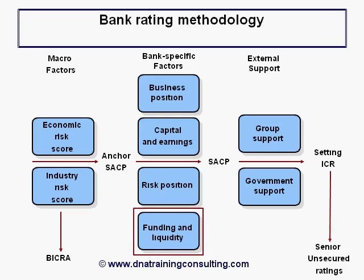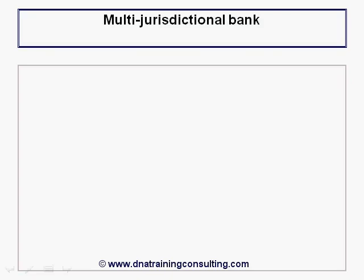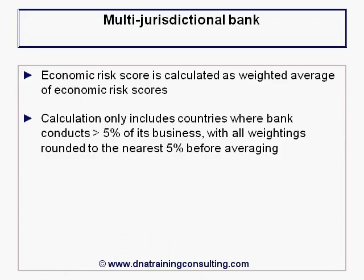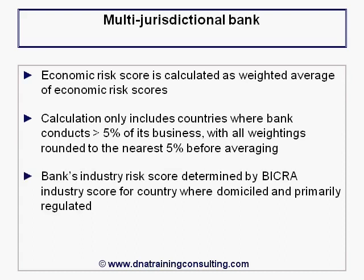Just before we begin our examination of these four bank-specific factors, we must deal with the case of a bank whose business is spread out among a number of jurisdictions. When a bank is active in more than one country, the economic risk score is calculated as a weighted average of the economic risk scores, including only countries where the bank conducts more than 5% of its business, with all weightings rounded to the nearest 5% before averaging. In contrast, a bank's industry risk score is determined by the BICRA industry score for the country where it is domiciled and primarily regulated.